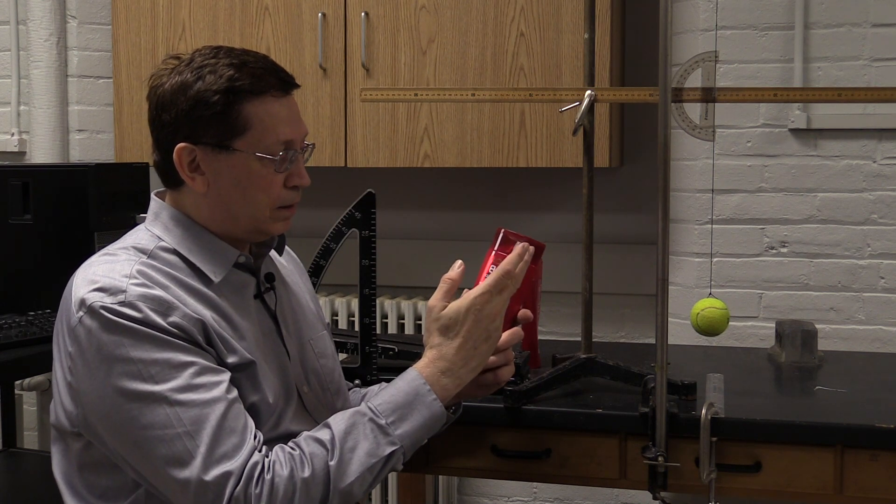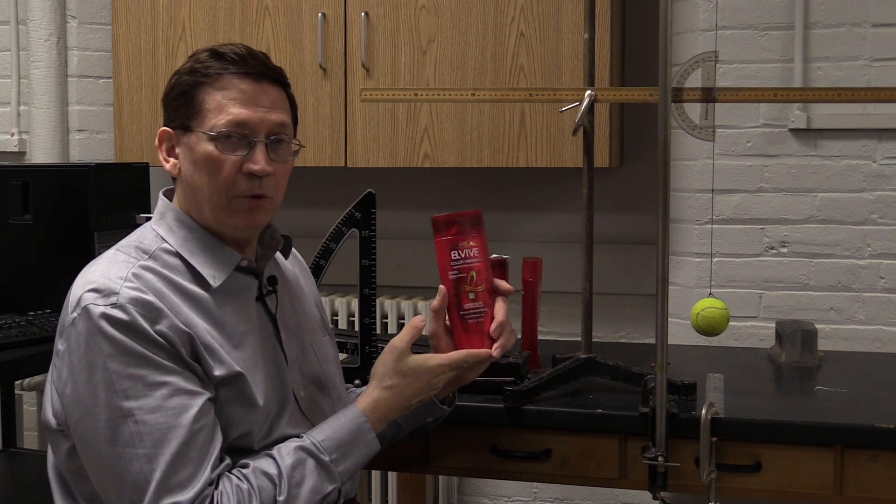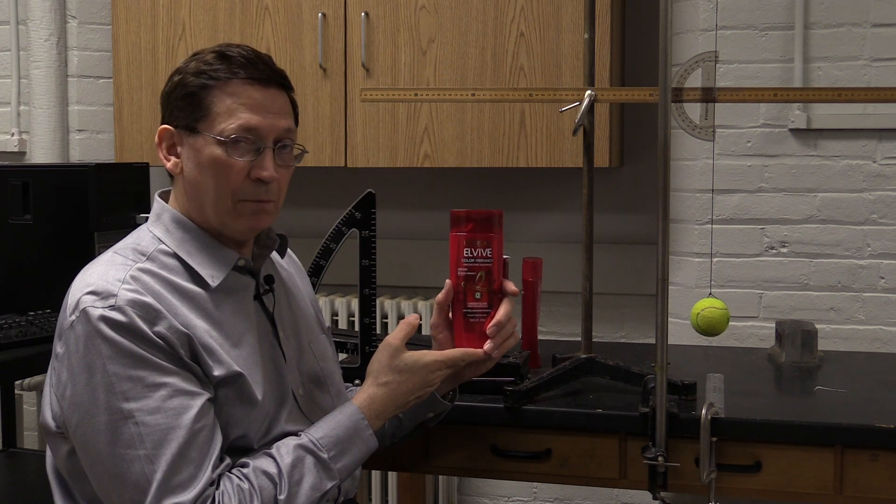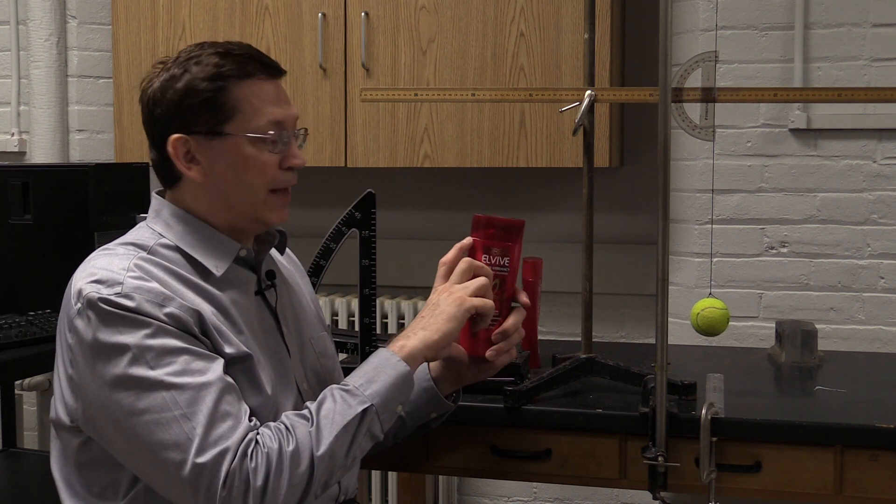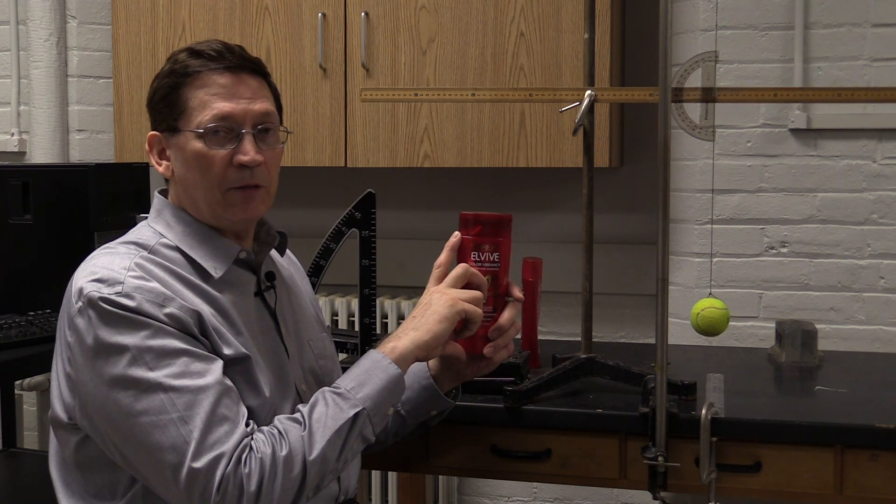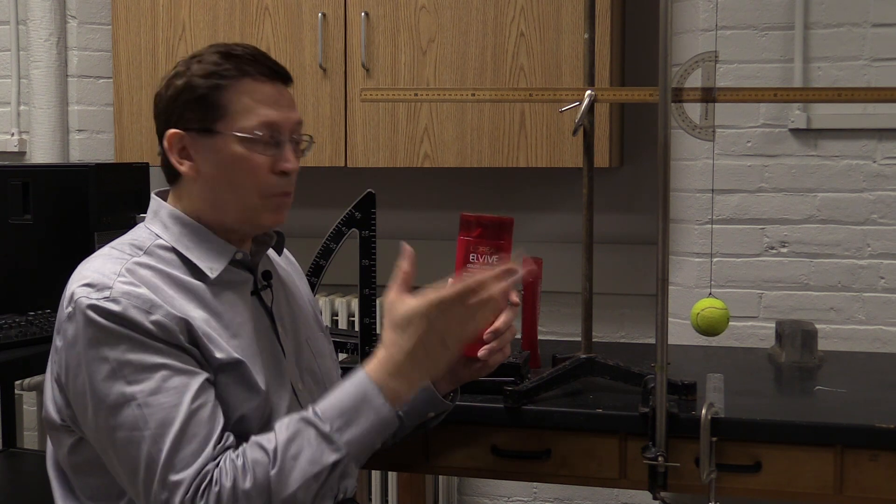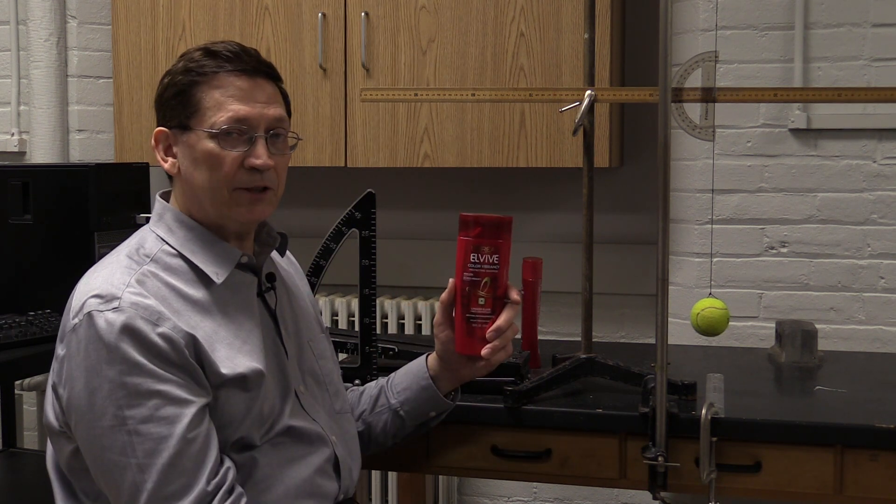The mass of an empty shampoo bottle was about 40 grams. The mass of the liquid inside is about 340 grams. So most of the mass is the mass of the liquid.